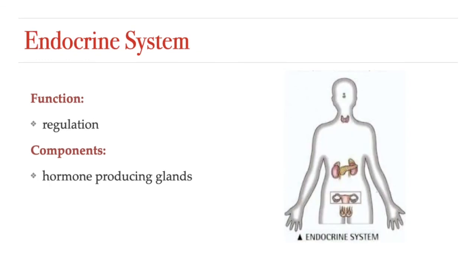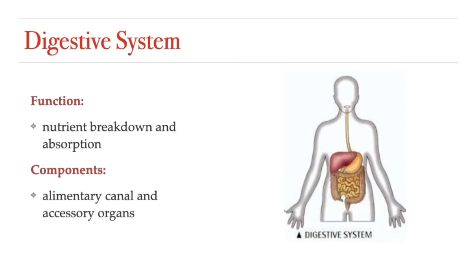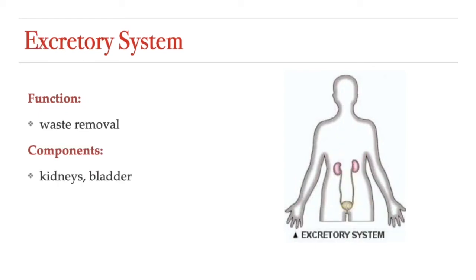The endocrine system is a series of glands that help us produce and secrete hormones that regulate our body processes. The digestive system is a series of hollow organs collectively called the alimentary canal, along with accessory organs that provide digestive juices. Its main job is to break down food nutrients into their smallest monomers so that they can be absorbed into the body and used for energy and to build body parts. The excretory system, or urinary system, helps regulate the removal of waste. Its main components are the kidneys, which filter our blood and produce urine, and the bladder, which stores that urine until we're ready to expel it.